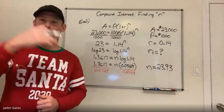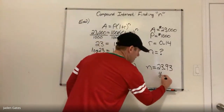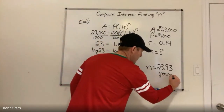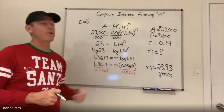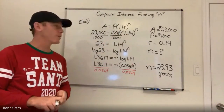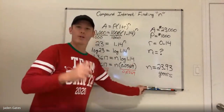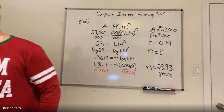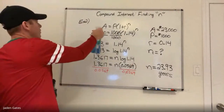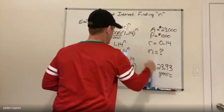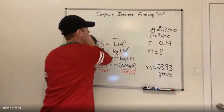n = 1.3617 ÷ 0.0569 = 23.93. Since this was compounded annually, n represents years — so it would take almost 24 years for $1000 to grow to $23,000 at 14% annually. Now we're going to switch it up and look at other compounding periods, not just annual, and find n using logs.